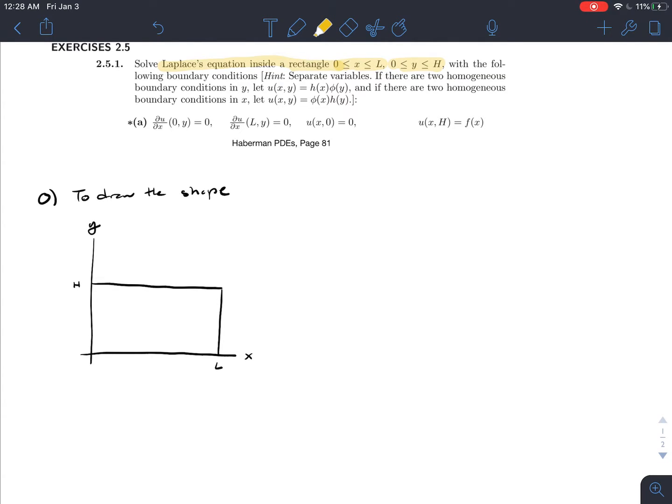Now we're going to label our boundary conditions. We're given two sets of boundary conditions. Let's go around each side of the rectangle and label each one. At the bottom, we're told that U(x,0) equals 0. On the opposite side, U(x,H) equals f(x). On this side, the first derivative of U with respect to x at (0,y) equals 0, and the opposite side also equals 0. And then Laplace equals 0.